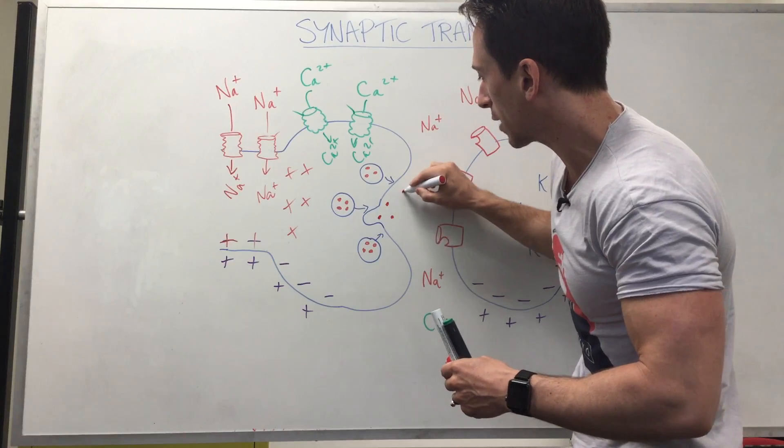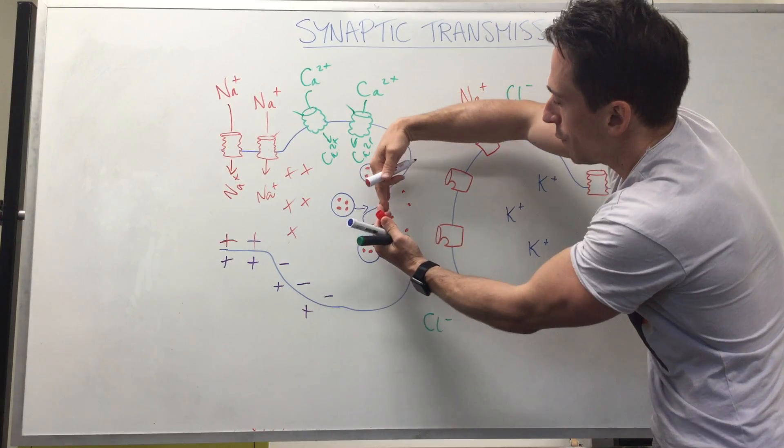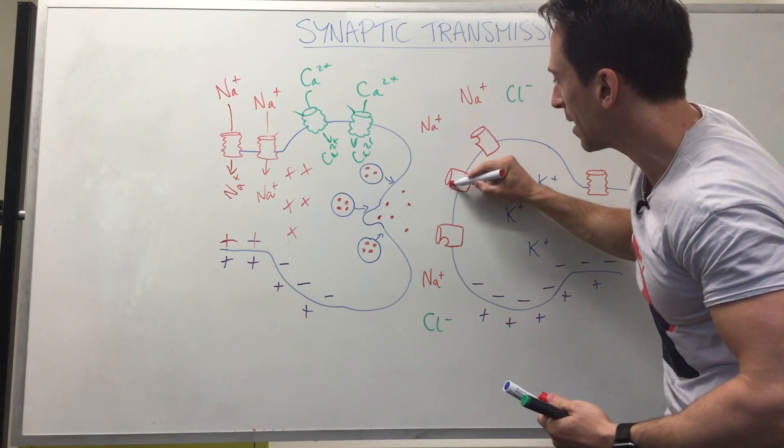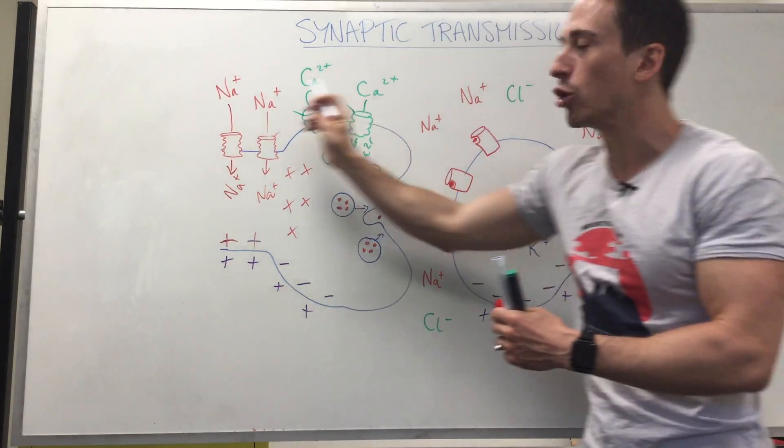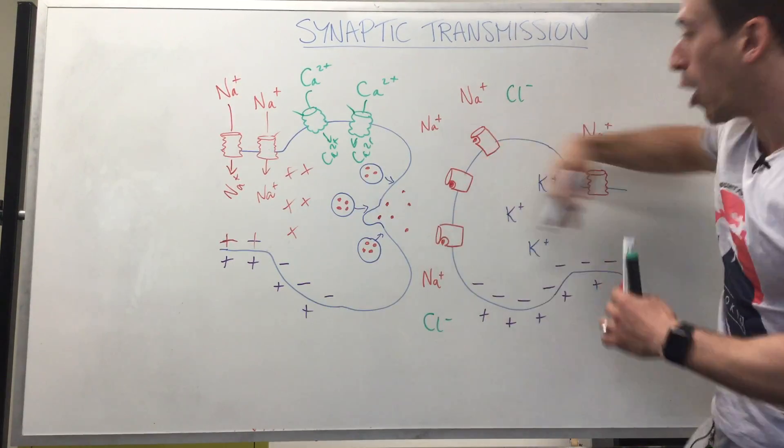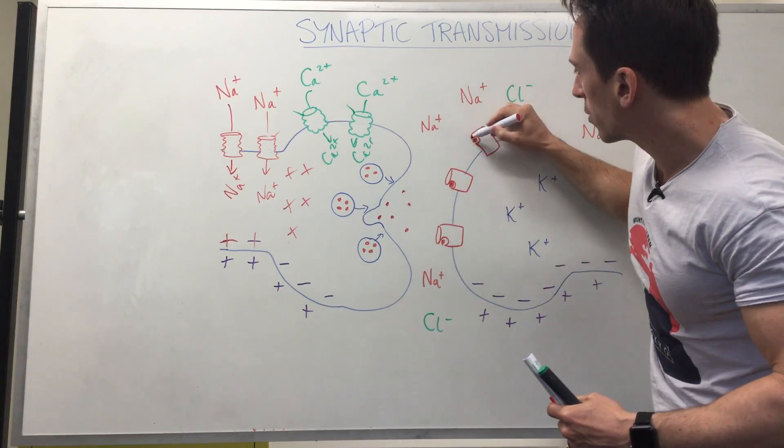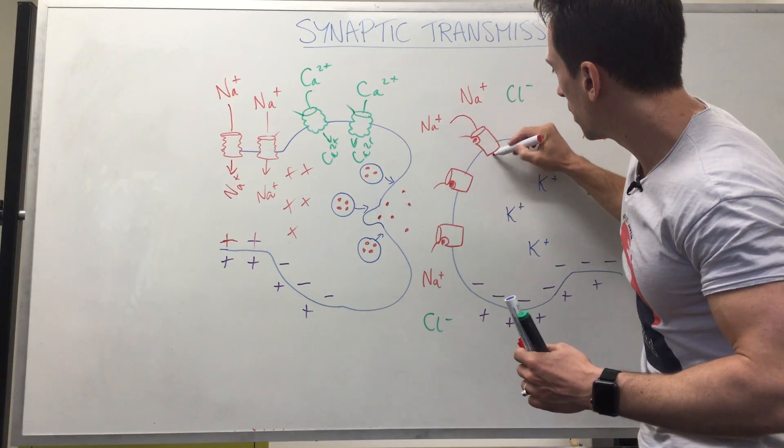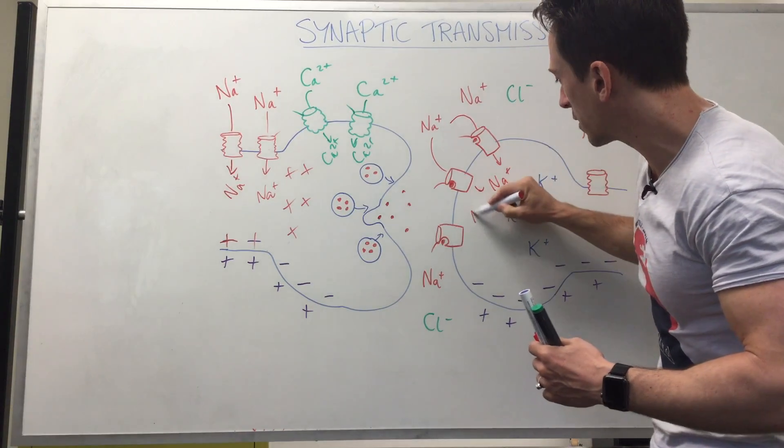Now if they are excitatory neurotransmitters, like glutamate for example, they will cross or diffuse that synaptic cleft. They will bind to their receptors on the next neuron. This is the pre-synaptic neuron, the neuron pre or before the synapse. This is the post-synaptic neuron. This neurotransmitter will bind to its receptor. The receptor will open up a channel and allow for sodium to enter the neuron, making it positive inside this neuron.